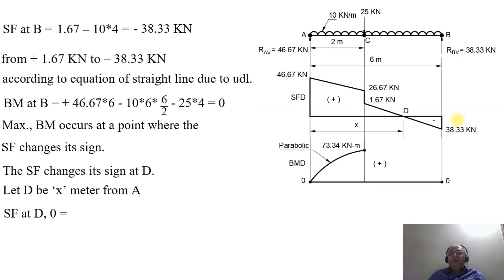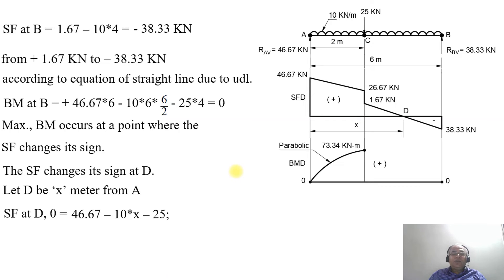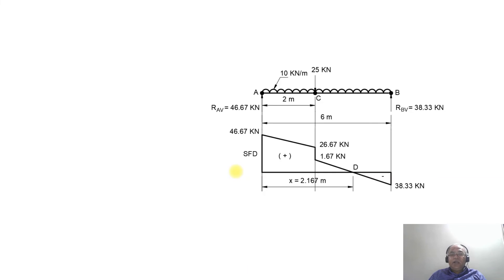At point D, the shear force equals zero because it is changing sign from positive to negative. Setting SF at D = 0: 46.67 − 10X − 25 = 0. On simplification, 10X = 21.67, therefore X = 2.167 meters from the left end A.